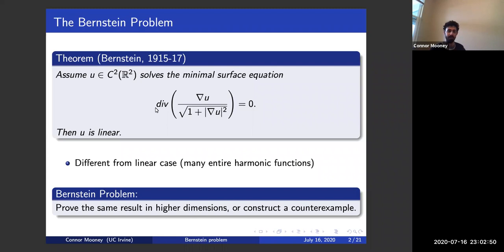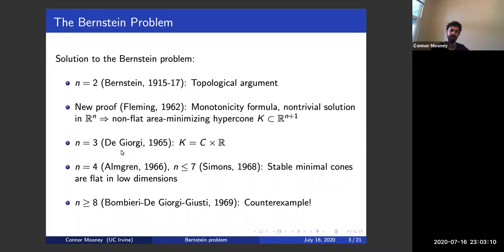The so-called Bernstein problem asks whether the same result holds when you replace R2 by Rn — so whether it holds in all dimensions, not just two dimensions. This problem is completely solved, but I'd like to spend a short time discussing some of the key ideas in its resolution because they're important for the rest of the talk and also beautiful in their own right. Bernstein's original proof in two dimensions is highly non-trivial and it involves two parts: a topological argument that doesn't involve the minimal surface equation at all, and a special observation about minimal surfaces in R3.